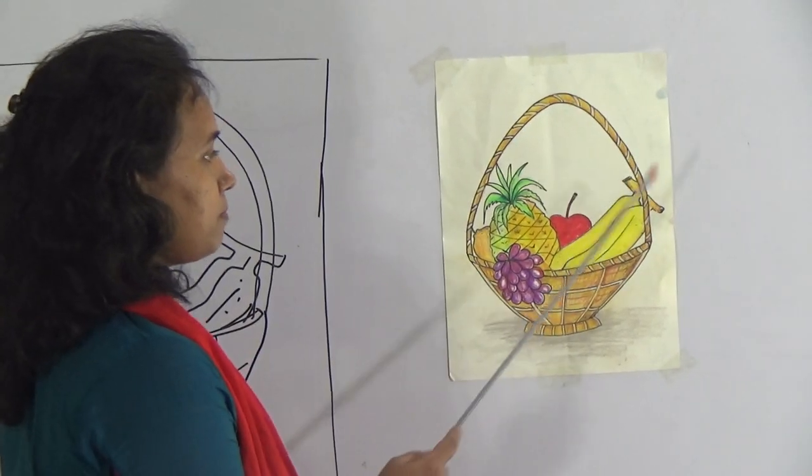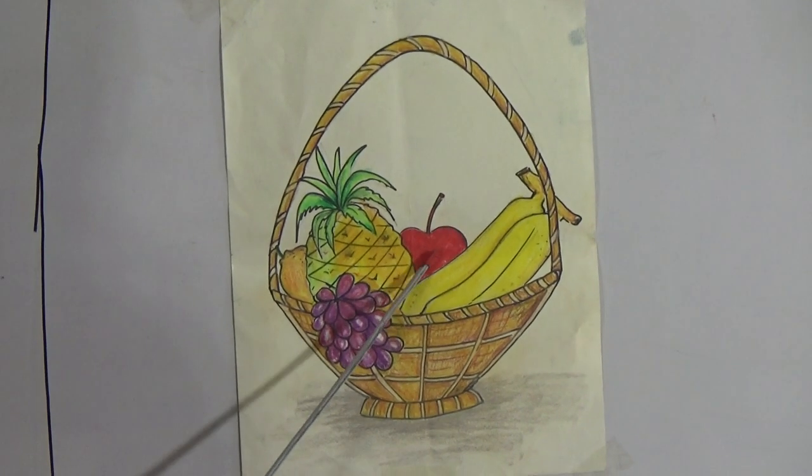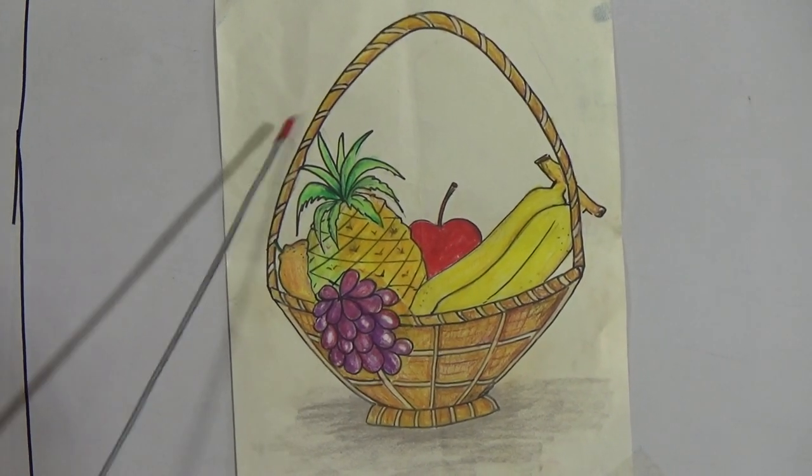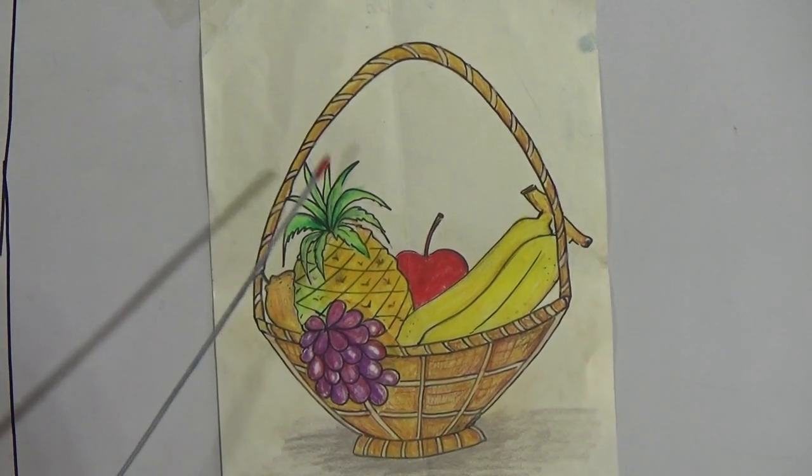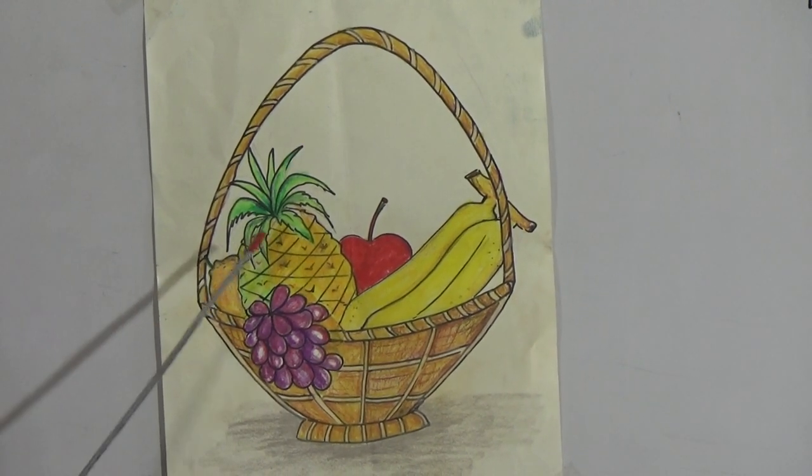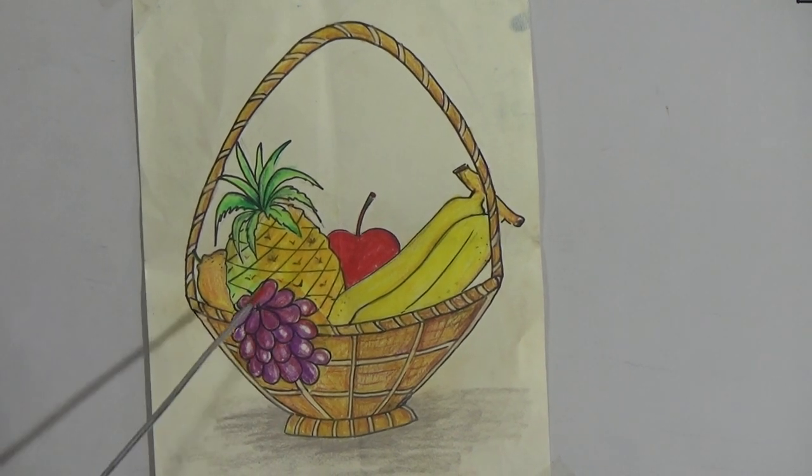And after that on the fruits I have used the fruits color. The banana is yellow, apple is deep red. On the pineapple I have used first light green and deep green. Here I have used light yellow, deep yellow and light green. On the grapes I have used the purple color.